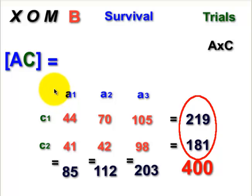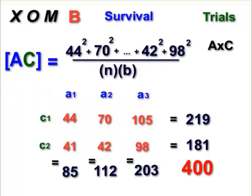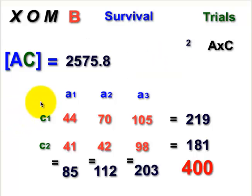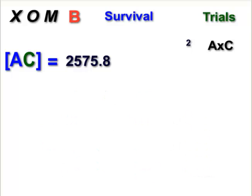Our A, C bracket term, we're gonna basically do the same thing. We already made this table, if you remember. Right? Let's get rid of this thing. We don't need that. But we're gonna, to find the A, C, we're gonna take 44 squared, 70 squared, 105 squared, all of these squared. Right? 44, 70, 105, 41, 42, 98 squared and divided by N times B. N is 4, B is 3. There's three levels in B. And we get A, C bracket term, A, C.